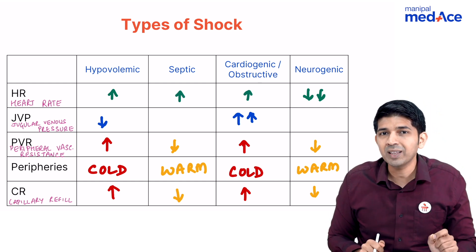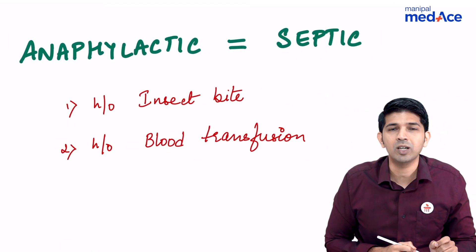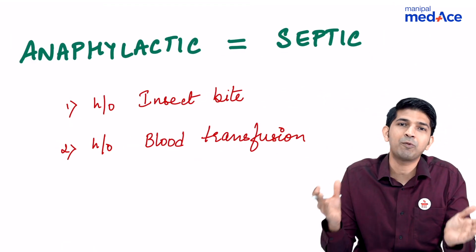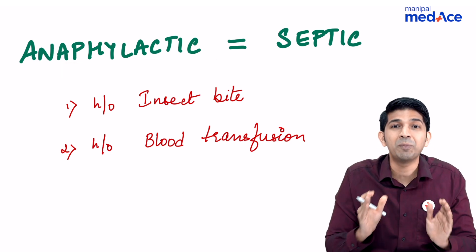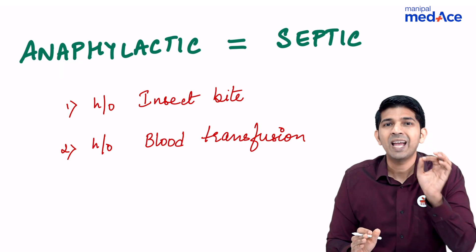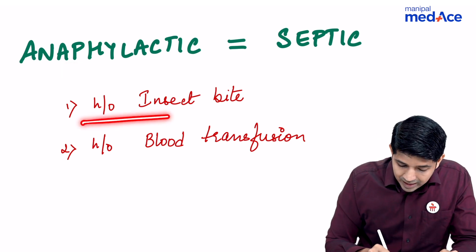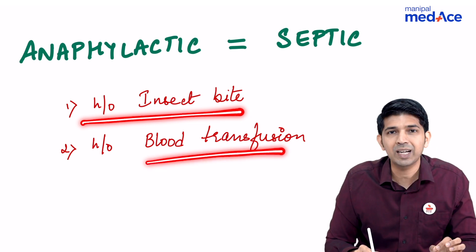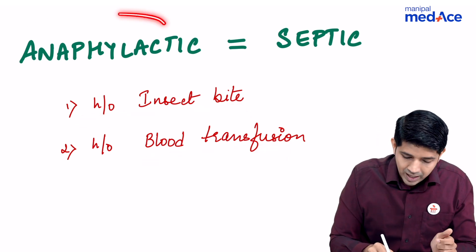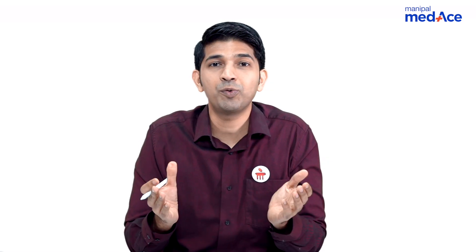The remaining type is anaphylactic shock. How do you differentiate anaphylactic from septic shock? All the features will be the same, except that in the question there will also be a history of insect bite or blood transfusion. If that is present, the answer becomes anaphylactic shock — and that is how you differentiate between the various types of shock.